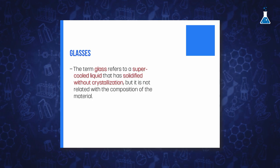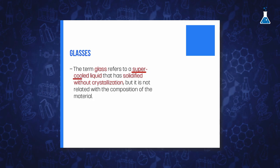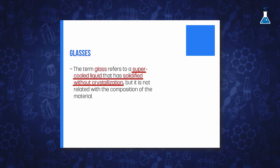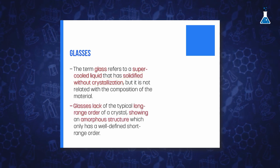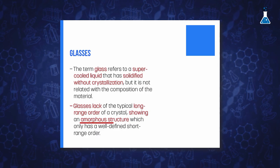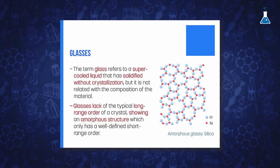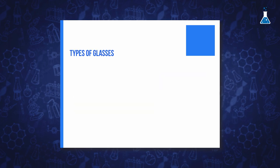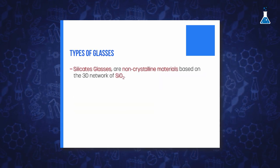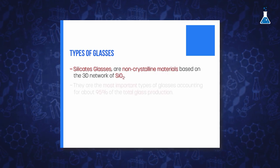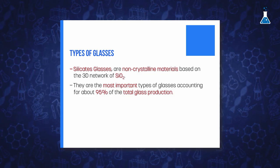Other important classes of materials derived from silicon dioxide with relevant properties in our society are glasses. Obviously, here we only discuss silicate glasses that are based on silica as main component. In science, the term glass is not related with the composition of the material, but it refers to a supercooled liquid that is solidified without crystallization. This type of material lacks the typical long-range order of a crystal and has an amorphous structure, which does not mean a complete state of disorder, but it only has a well-defined short-range order. Silicate glasses are non-crystalline materials which are based on a three-dimensional network of silicon dioxide and are the most important type of glasses, accounting for about 95% of the total glass production.